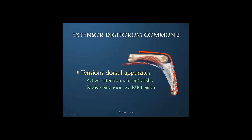When the metacarpal phalangeal joint is flexed and one assumes the extensor digitorum communis is not active, it is the flexion position itself that creates tension of the EDC into the dorsal apparatus. So there's active extension via the central slip when the MCP joint is in extension, but when we flex the MCP joint there's passive extension.